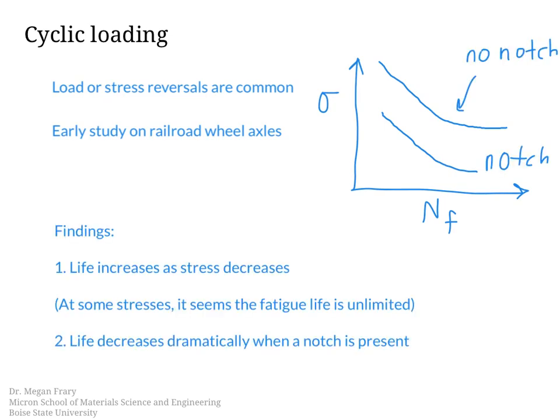So two outcomes of this is that a property known as the fatigue limit was determined, and that's essentially the stress or number of cycles below which we don't expect failure to occur from fatigue. And the second is that this study which looked at the effect of a notch on fatigue life, and the fact that the life dramatically decreases when the notch is present, suggests that fatigue happens in a three-step process.